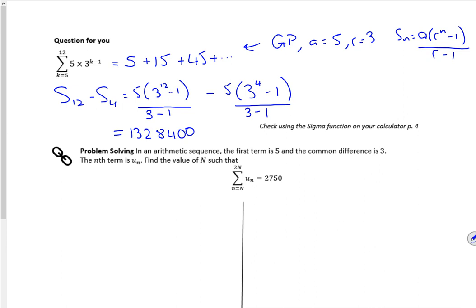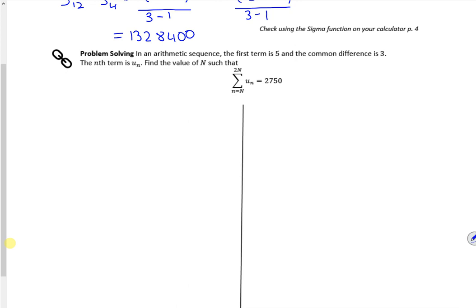I've got 4 minutes left to do a problem solving question. So it says the first term is 5 and the common difference is 3. So a is 5, d is 3.